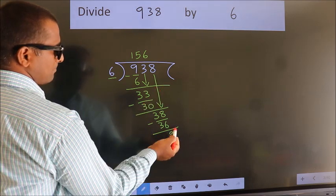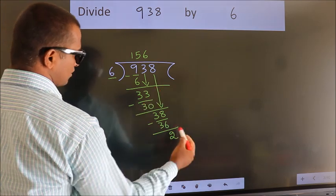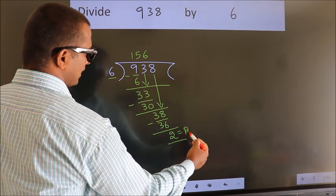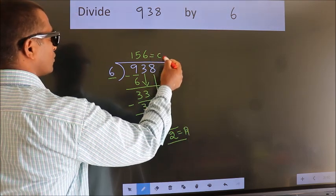No more numbers to bring down. So we stop here. This is our remainder. This is our quotient.